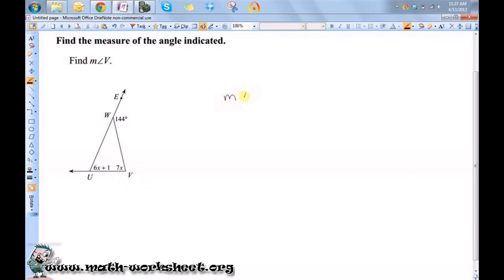The measure of angle V plus... now we can't call this angle U because there's also an angle out here, so we're going to have to call it angle VUW. So, plus the measure of angle VUW is equal to the measure of angle EWV.